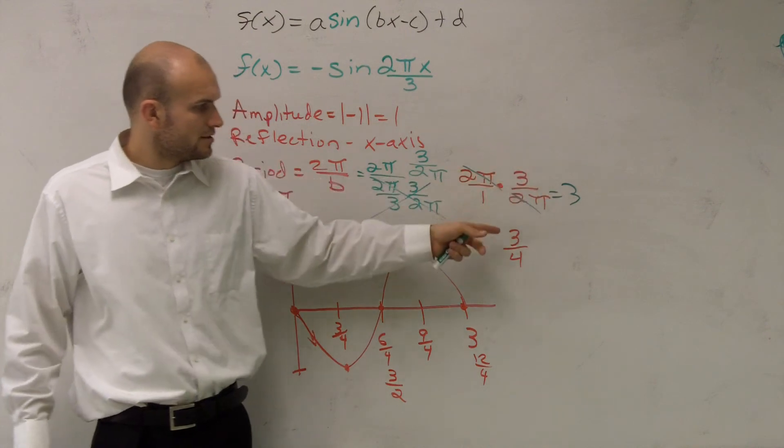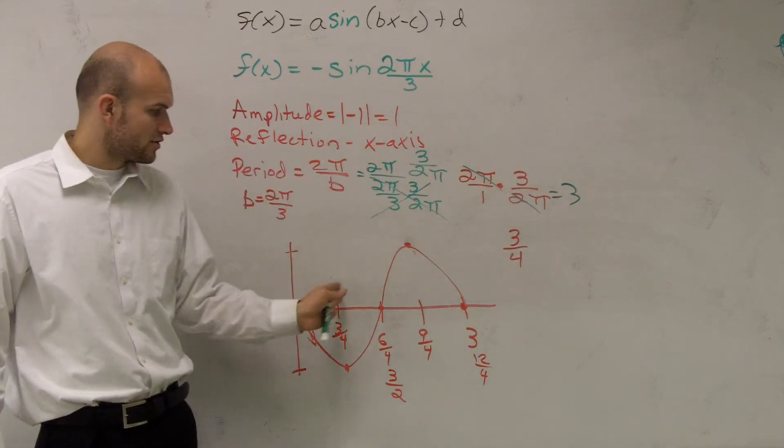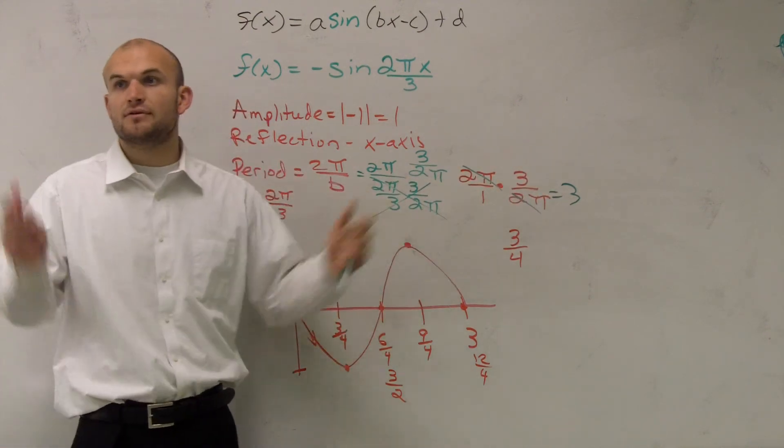Then, once you have your B, divide it by 4 and find your increments. Then just simply graph it.